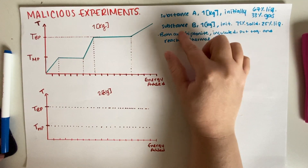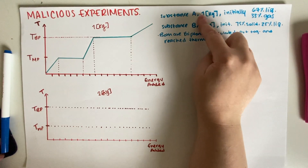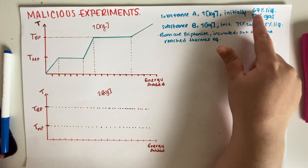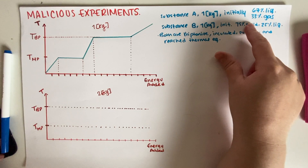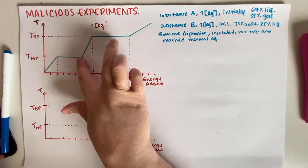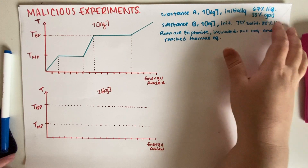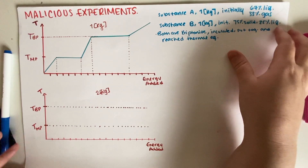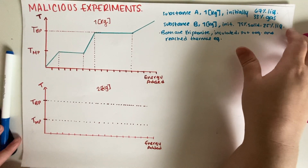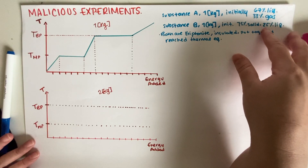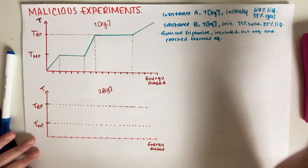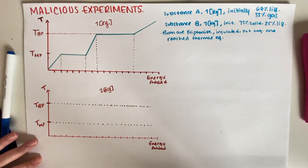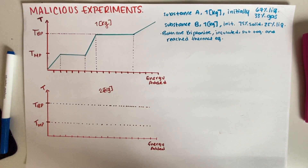Both of these substances are kryptonite, they have exactly the same mass, and we're given the initial states. We basically just have to plot the initial states on the graph. Substance A is initially in a mixed state — liquid and gas — so it's two-thirds liquid, one-third gas. We go to the section of the graph that represents liquid and gas.